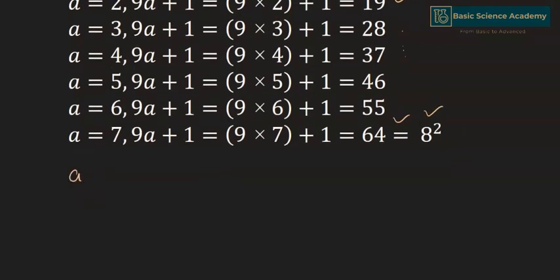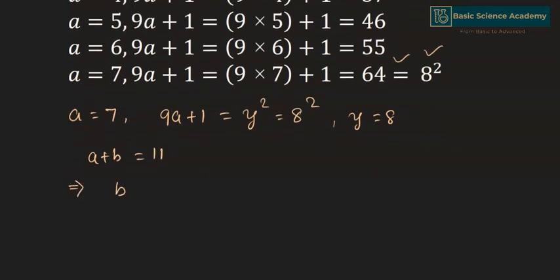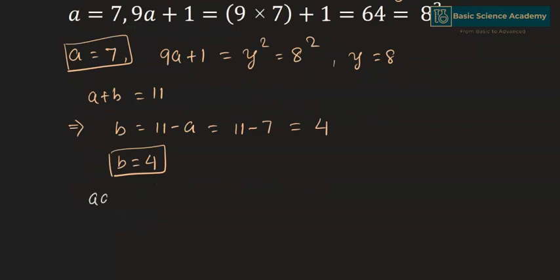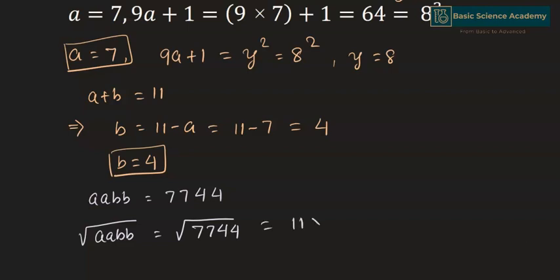Hence A = 7, since 9A + 1 = 64 = 8², meaning y = 8. Since A + B = 11 and A = 7, B = 11 − 7 = 4. Therefore the four digit number is AABB = 7744, and the square root of 7744 = 11 × 8 = 88. The answer is 88.